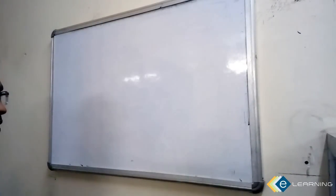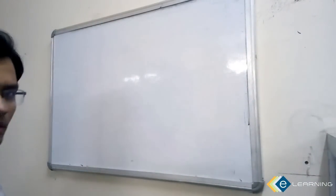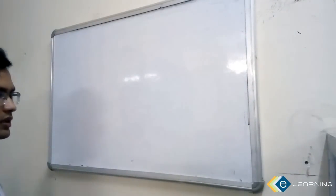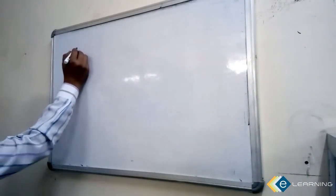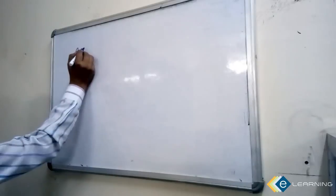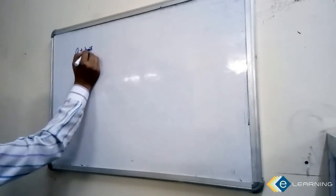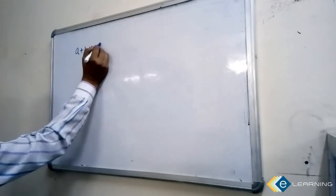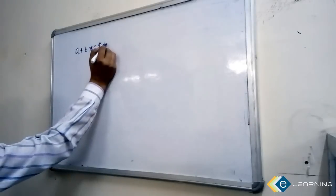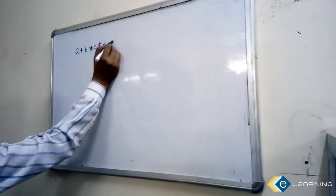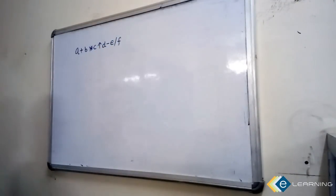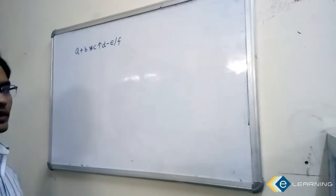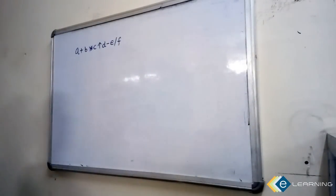In this video we are going to discuss how to construct an expression tree of a given valid expression. For example, suppose the expression given is a plus b star c power d minus e divided by f. This is the algebraic expression and you need to construct an expression tree.